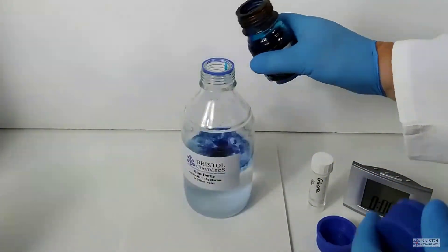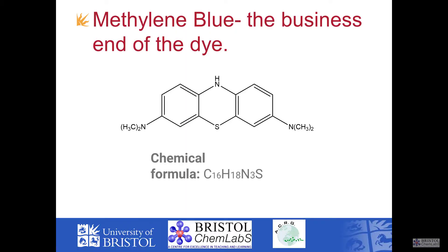Let's look at the structure of the methylene blue — a simplified structure. Even though it's a simplified structure, it's fairly complex. There are 16 carbons, 18 hydrogens, 3 nitrogens, and a sulfur. Where we have complex molecules, it's standard amongst chemists to use what we call the skeleton formula, and only show the covalent bonds between carbon atoms as sticks. We don't put the carbon in, and we don't put the additional hydrogens that would make up the four bonds around each carbon.